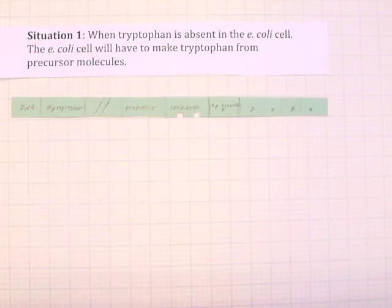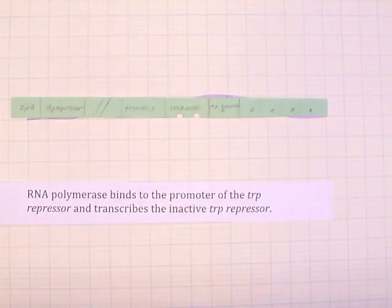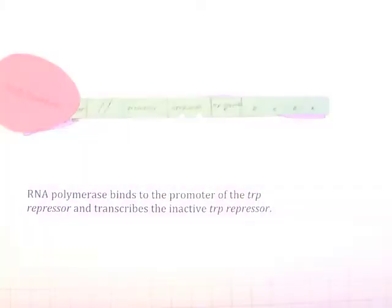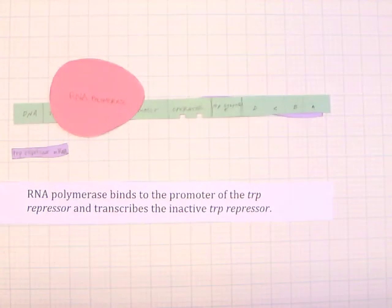Situation 1: When tryptophan is absent in the E. coli cell. The E. coli cell will have to make tryptophan from precursor molecules. Therefore, RNA polymerase binds to the promoter of the trp repressor and transcribes the inactive trp repressor.